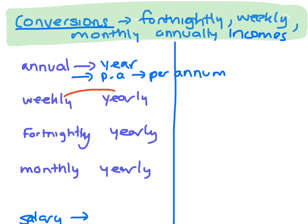So if you're given your weekly income and you want to get to your yearly, you have to times by 52. So how much you earn in a week you times by 52.